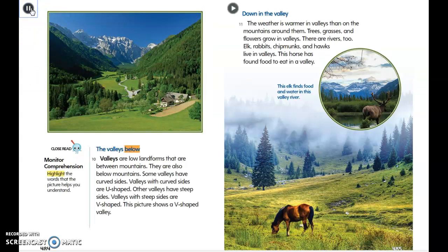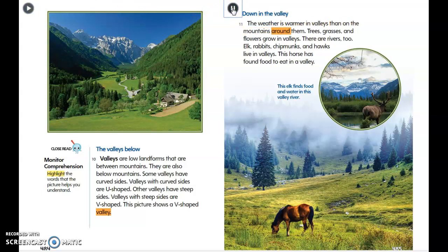Valleys are low landforms that are between and below mountains. Some valleys have curved sides and are U-shaped. Other valleys have steep sides and are V-shaped. The weather is warmer in valleys than on the mountains around them.